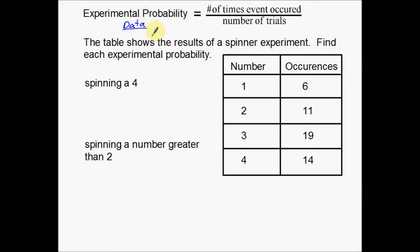It uses numbers from a chart or something to that effect, rather than the theoretical possibility which deals with what could happen. Experimental probability deals more with what did happen.